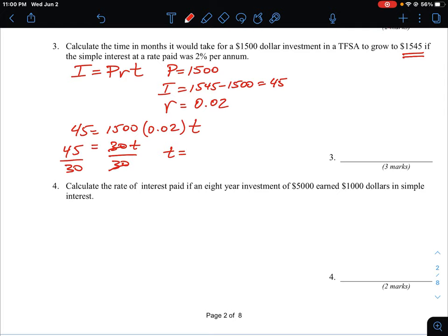Now, most of these questions, you probably are going to end up getting it into a decimal form. And you usually don't leave it in fractions. So 45 over 30 actually works out to 1.5. Now again, what is the unit for time here?